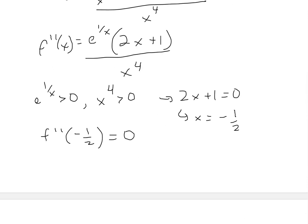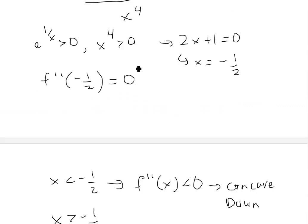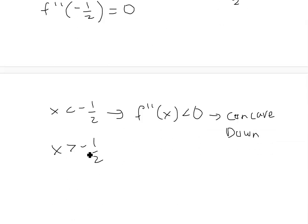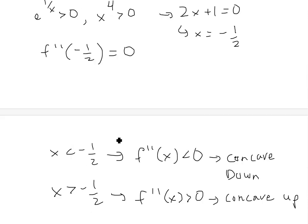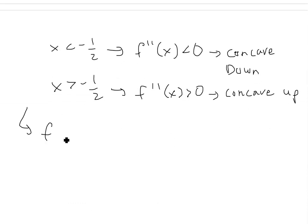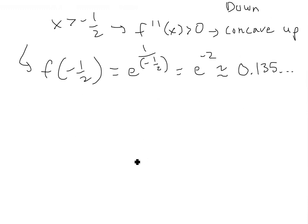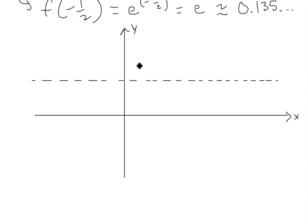When x > −1/2, the factor 2x + 1 is positive, so f'' > 0, meaning the function is concave up. We can also find the function value at x = −1/2: f(−1/2) = e to the power of 1 over (−1/2), which flips to e to the negative 2, approximately equal to 0.135.